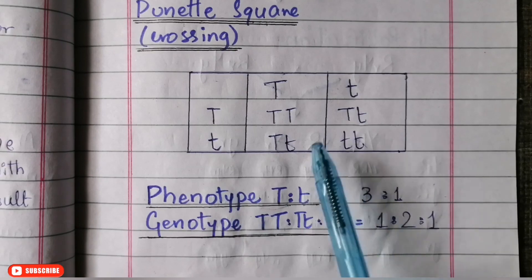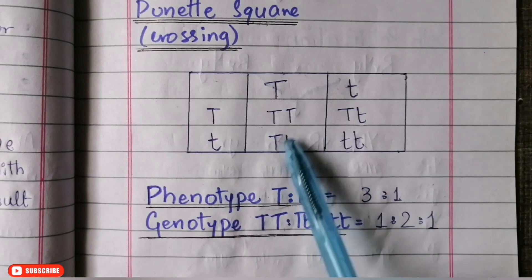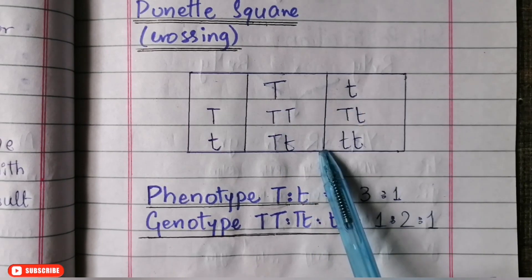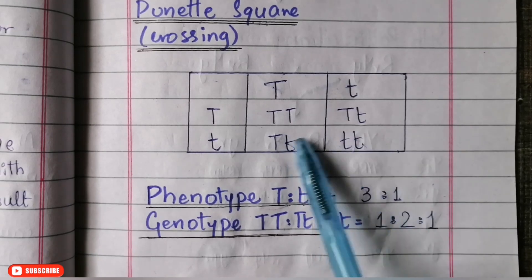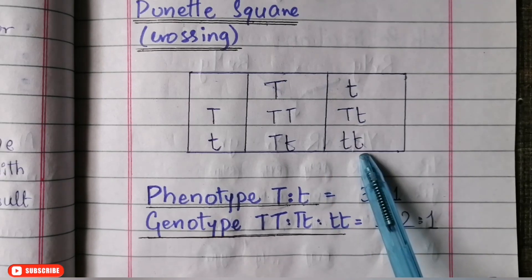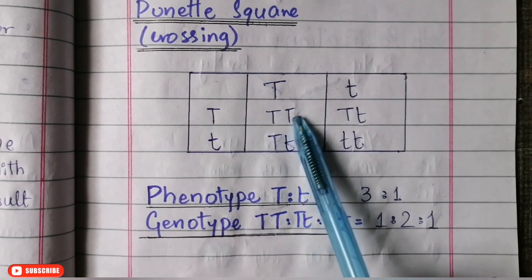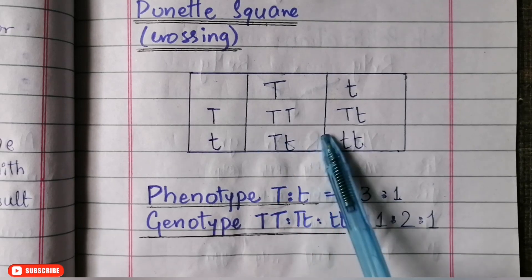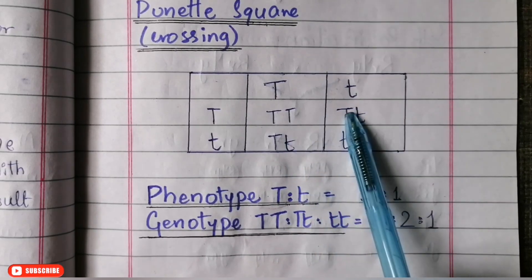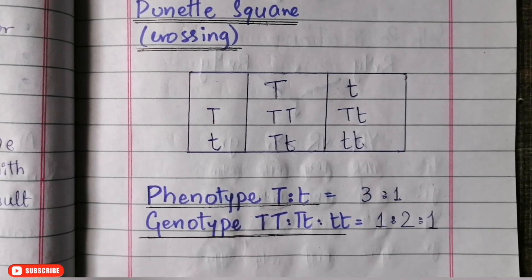Looking at the Punnett square results, three out of four boxes have a dominant capital T allele present, meaning the phenotype is tall, and only one box is small t small t, giving a short plant. So the phenotypic ratio of the monohybrid cross is 3 tall : 1 short. For the genotypic ratio: one box is homozygous tall (capital T capital T), two are heterozygous tall (capital T small t), and one is homozygous short (small t small t), giving a genotypic ratio of 1:2:1.